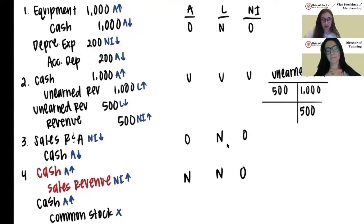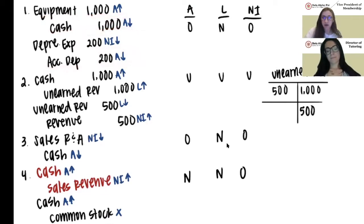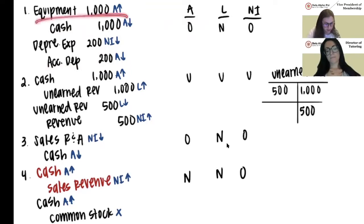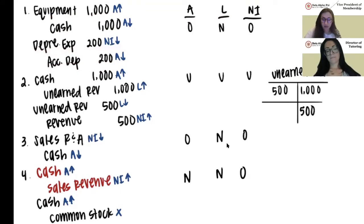Looking at the answer: equipment should have increased assets by $1,000 and cash would have decreased assets by $1,000, so those net to zero. But accumulated depreciation would have also lowered our assets, and since it wasn't recorded, our assets are overstated. None of these accounts affect liabilities, so no effect there. Net income should have been decreased but wasn't, so net income is overstated.